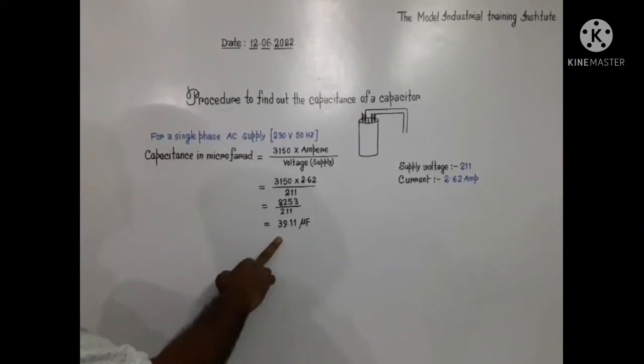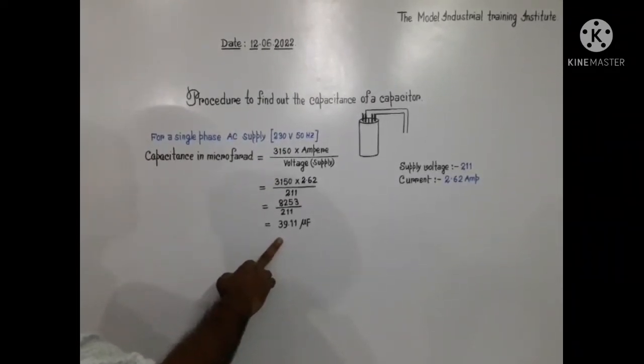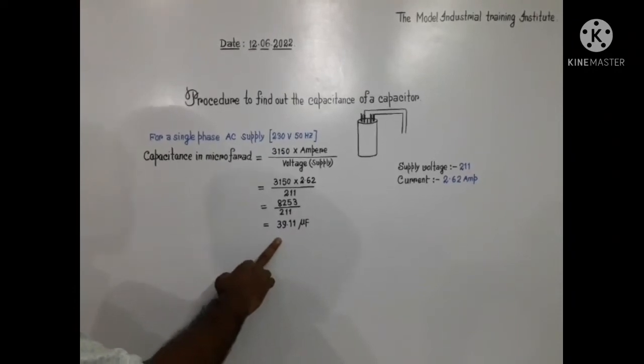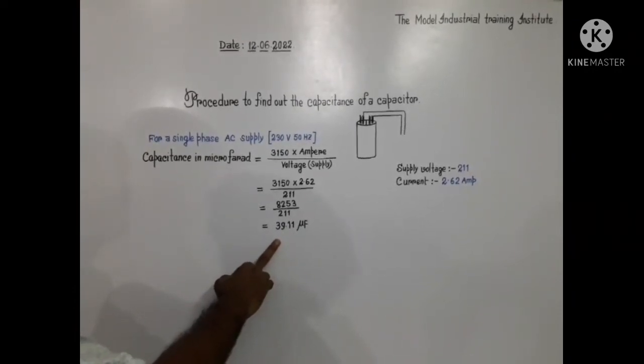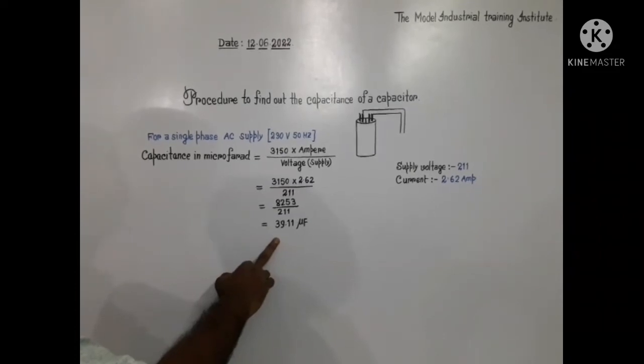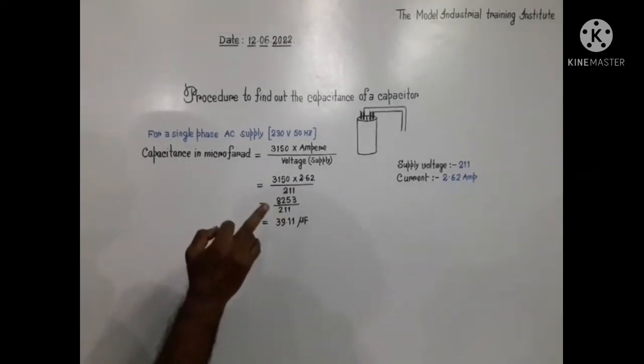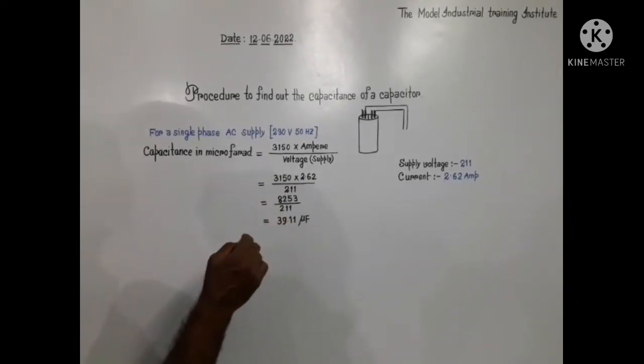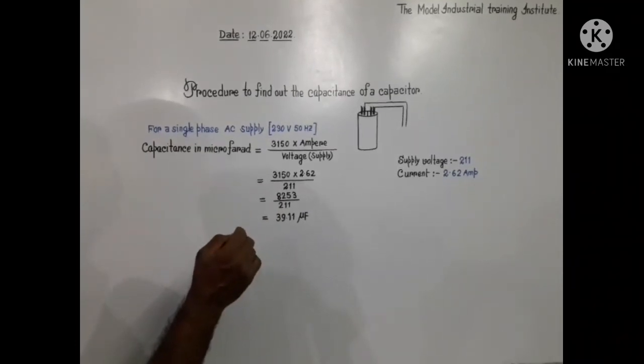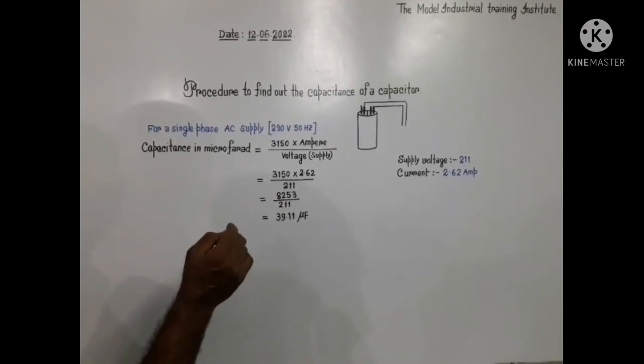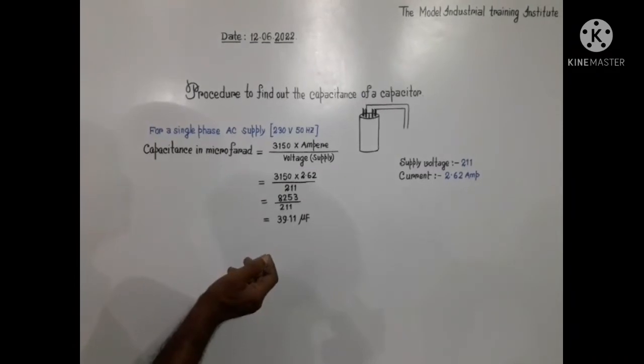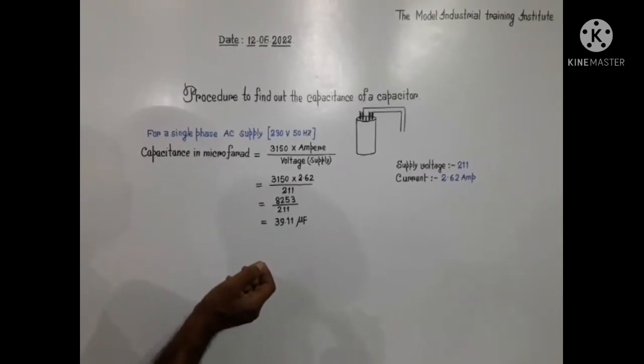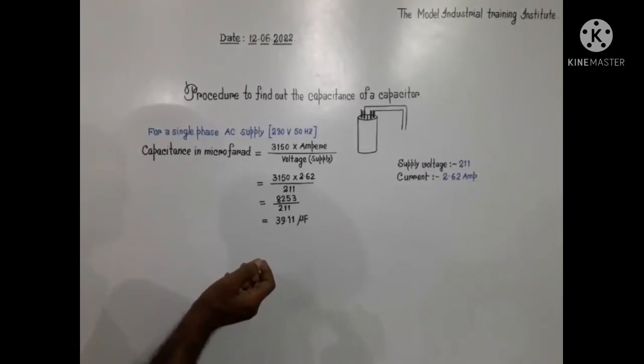Hope you people can do it easily. Thank you. Next time I shall show for what kind of motor what capacity of capacitor will be required. How much MFD will be required for 1 ton, 1.5 ton, 2 ton AC.